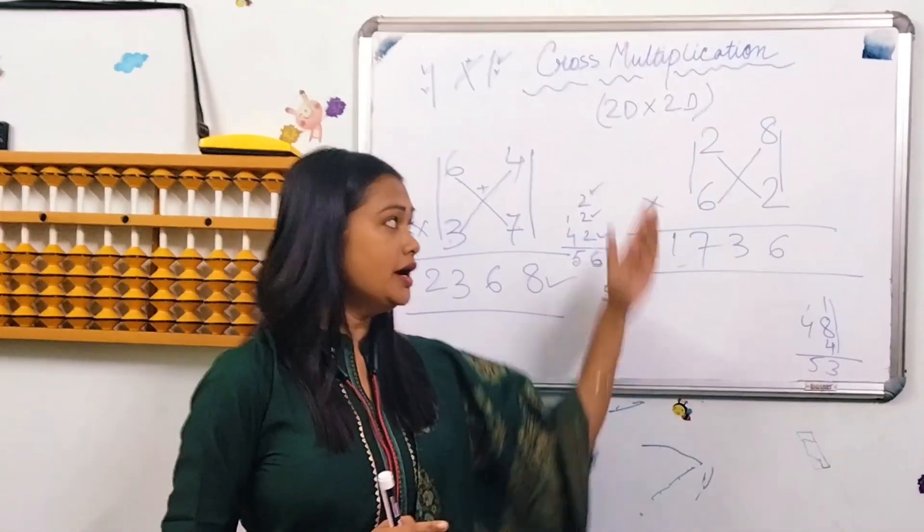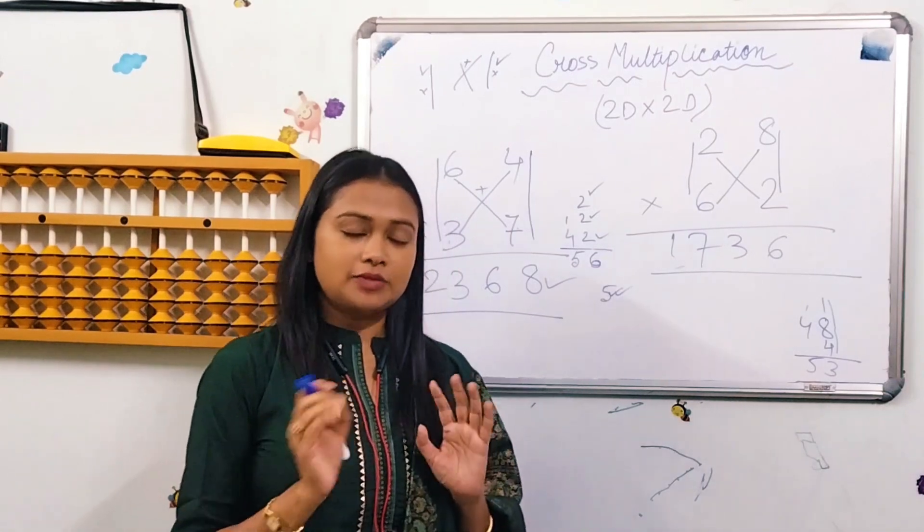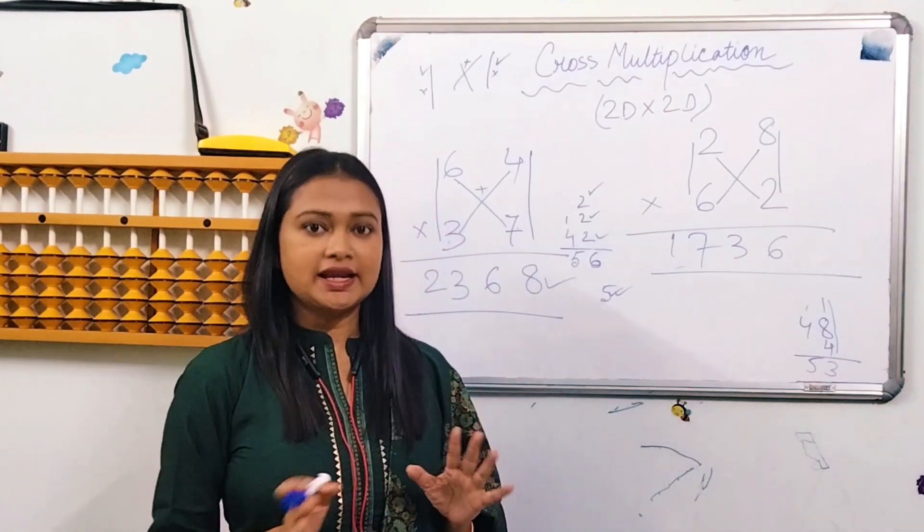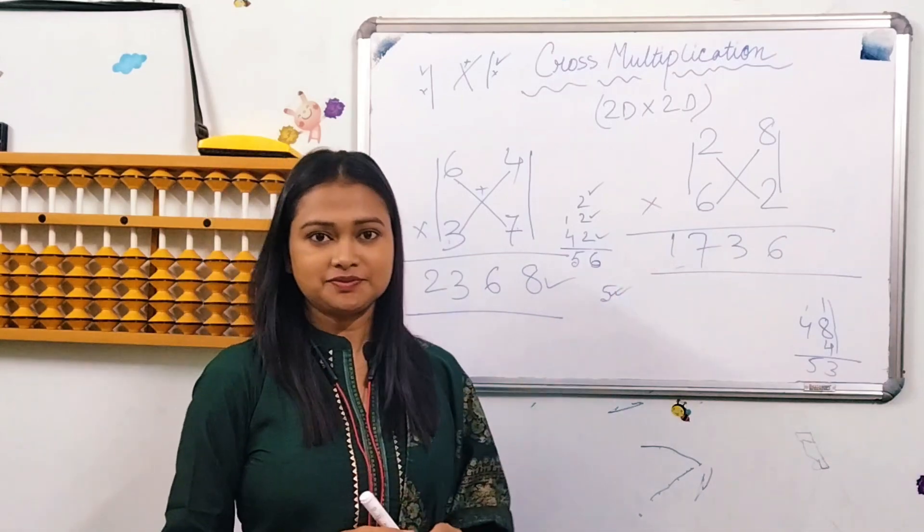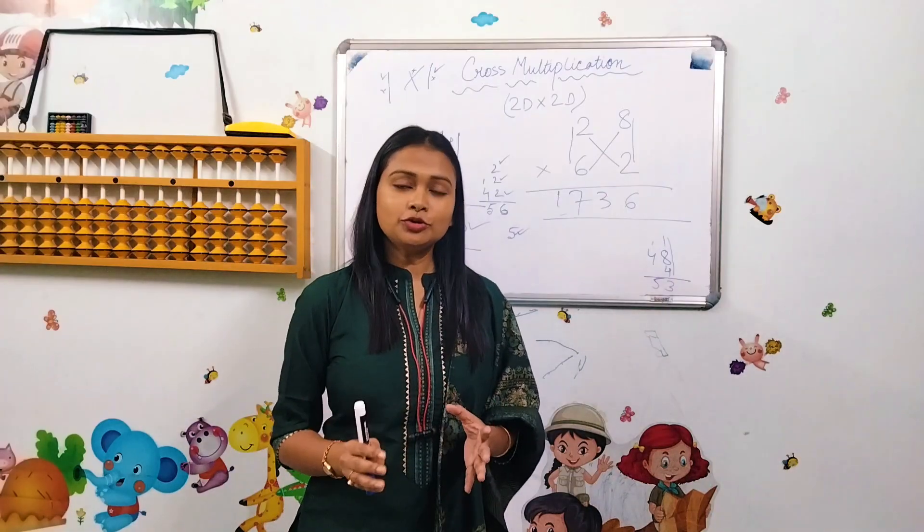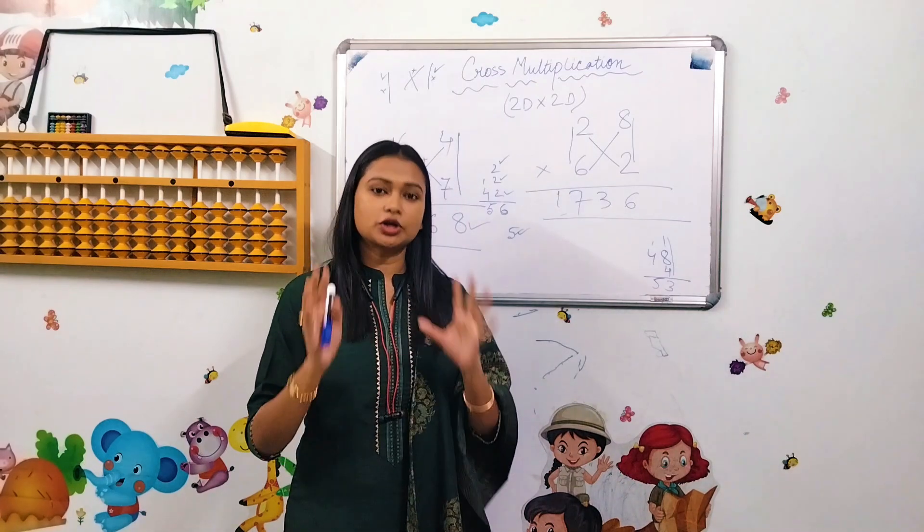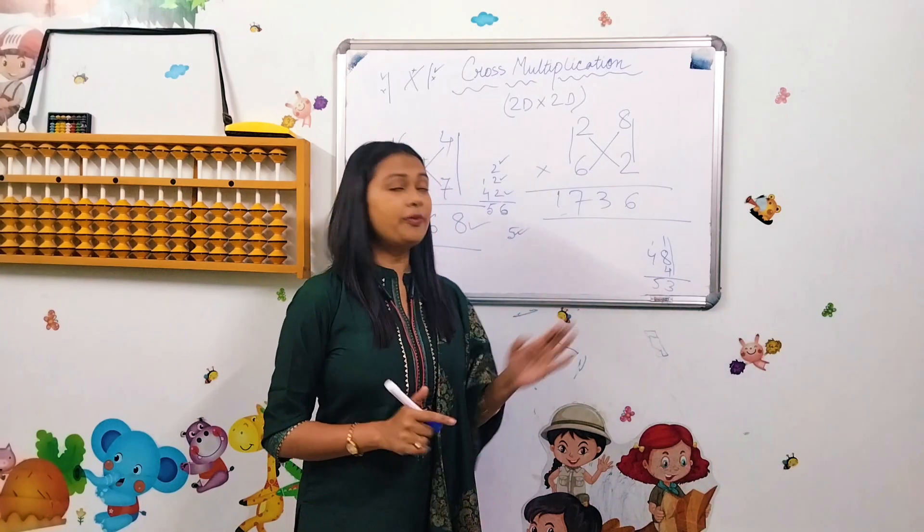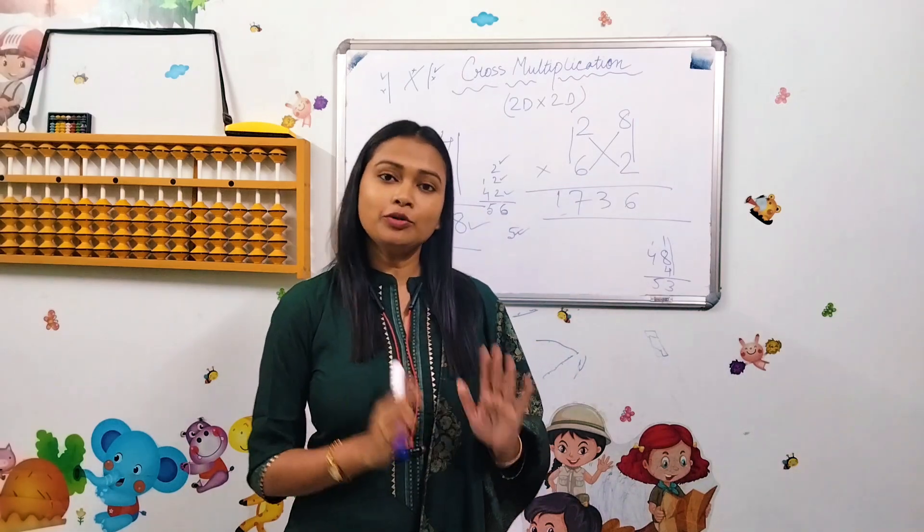So you can see how double-digit into double-digit works. From 11 to 99, which is double-digit, the same process applies. You have to practice with your numbers, double-digit into double-digit. Practice, practice.